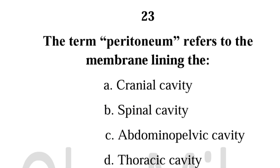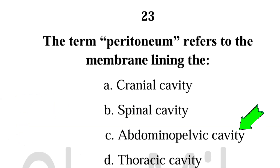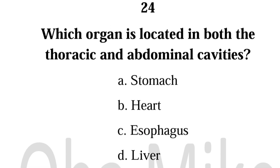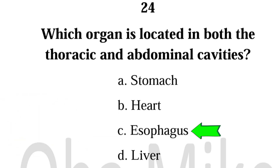Number 23. The term peritoneum refers to the membrane lining the: Abdominal pelvic cavity. Number 24. Which organ is located in both the thoracic and abdominal cavities? Esophagus.